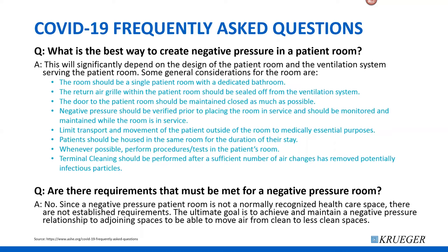Are there requirements that must be met for a negative pressure room? The general answer is no — there are no real established requirements. The ultimate goal is to achieve and maintain a negative pressure relationship to adjoining spaces, moving air from clean to less clean. If you have a 0.01 inch water column negative pressure differential between the isolation room and the adjoining spaces, then technically that is a negative pressure environment.